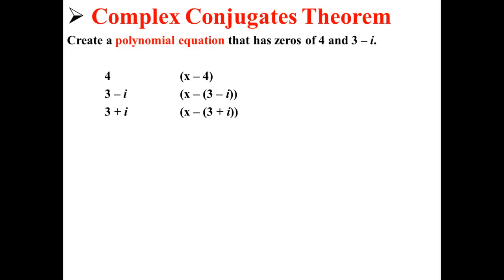We rewrite our zeros in the form they would be in in the equation: x minus 4, x minus 3 minus i, and x minus 3 plus i. Now we can create our polynomial equation by multiplying together these three zeros.